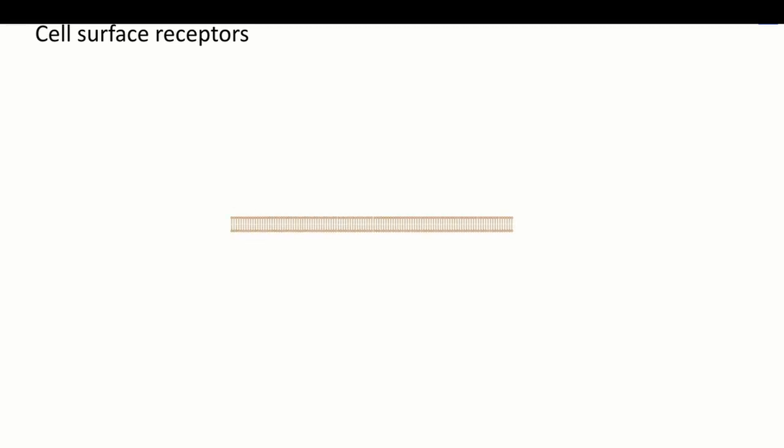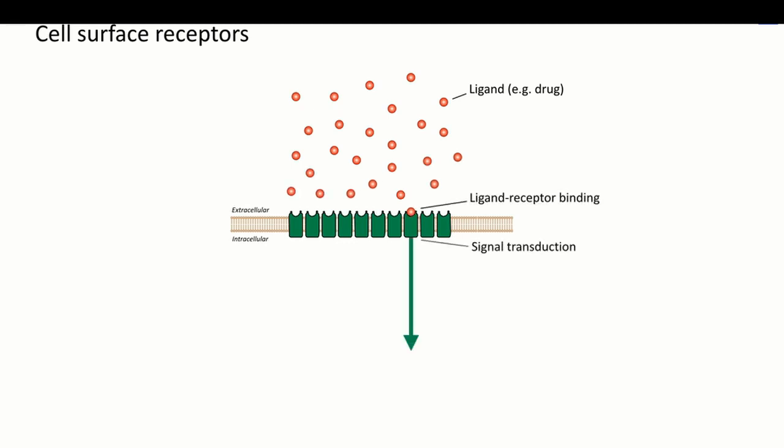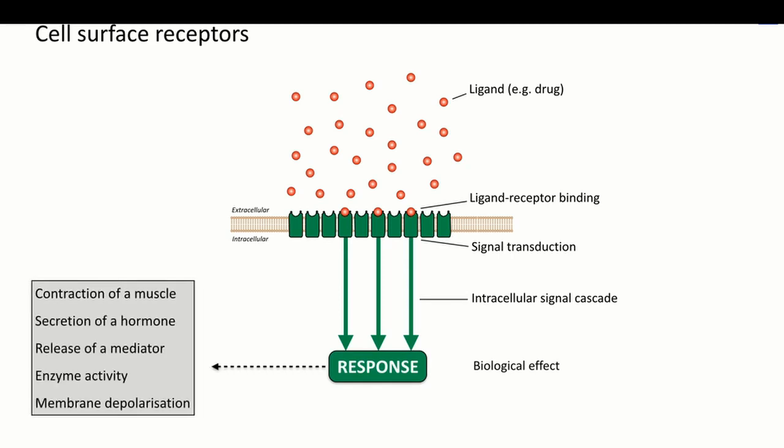In the previous presentations, we have seen how drugs interact with cell surface receptors to initiate a signal cascade within the cell and produce their biological effects. We will now explore some of the other mechanisms of drug action in the body that don't involve drugs interacting as receptor ligands.